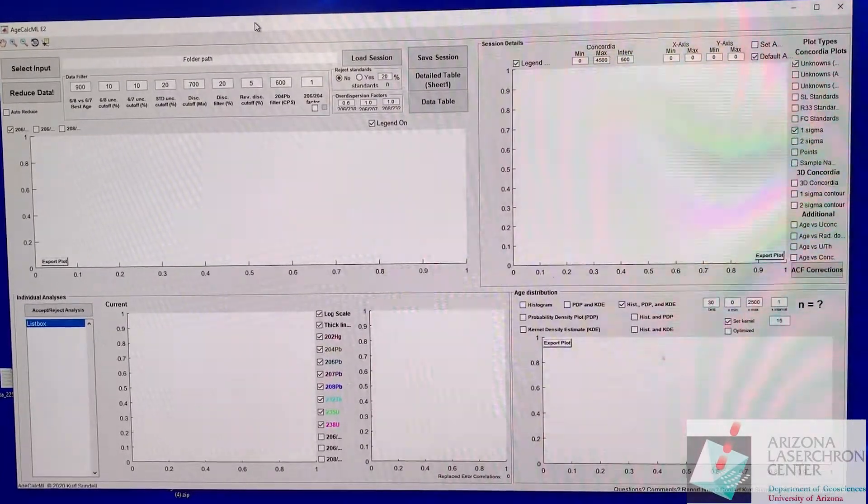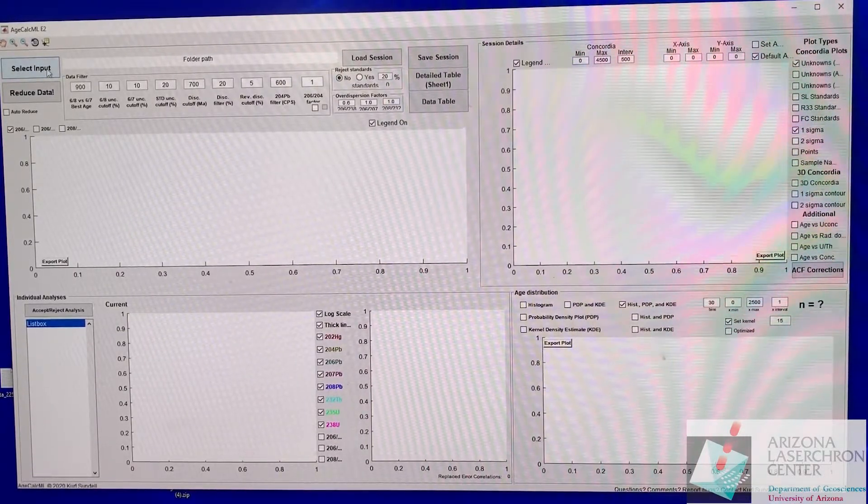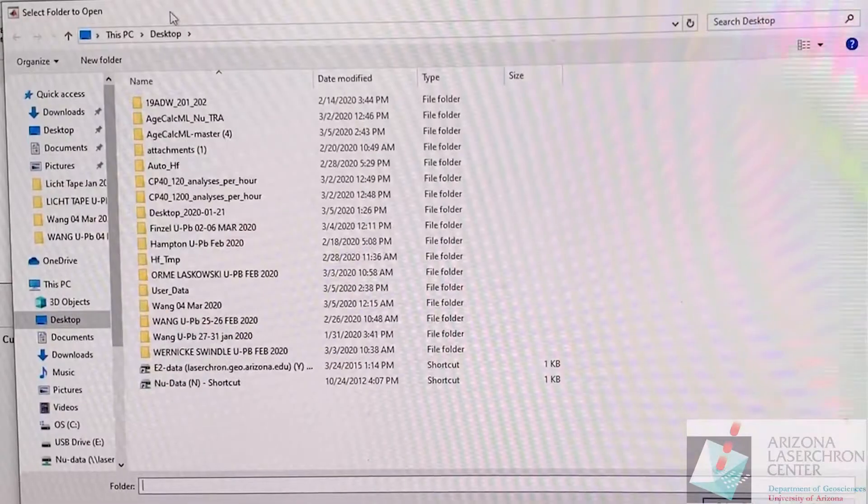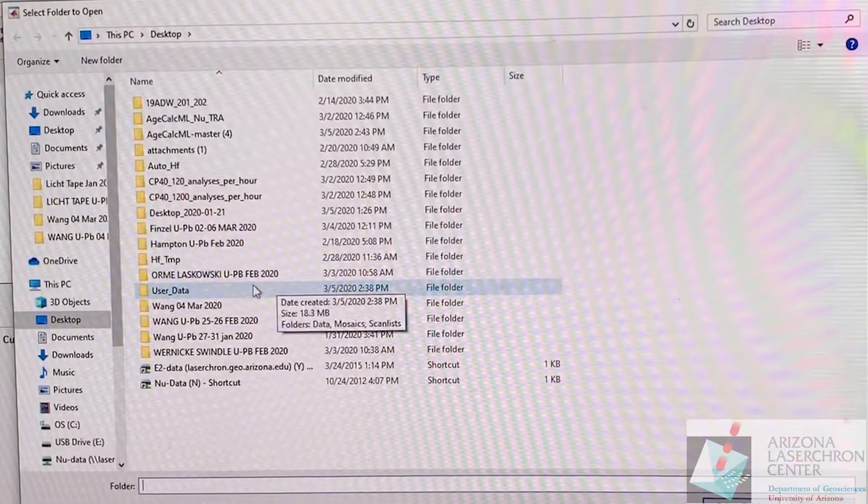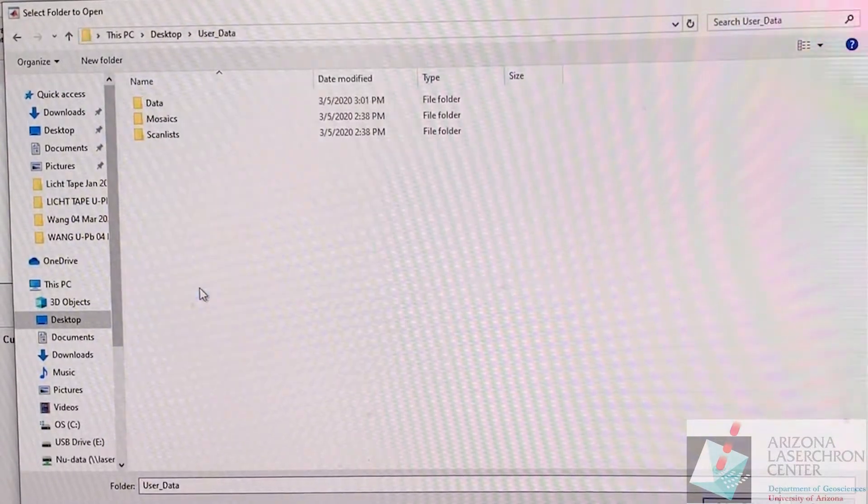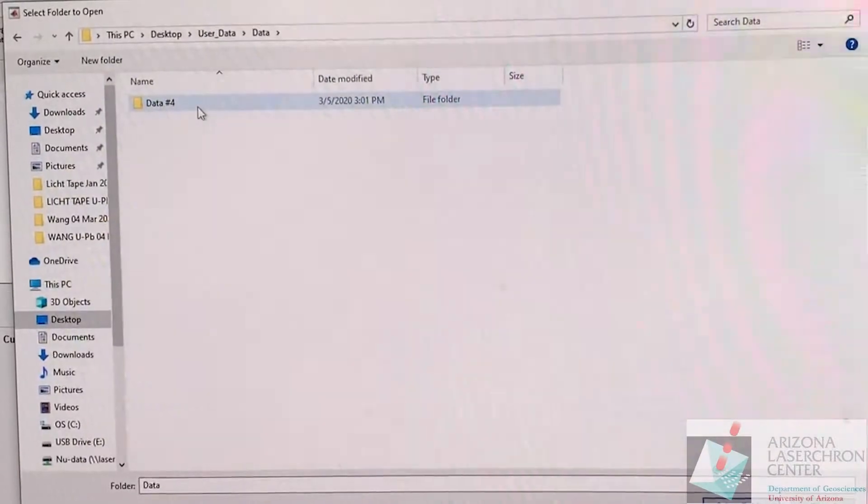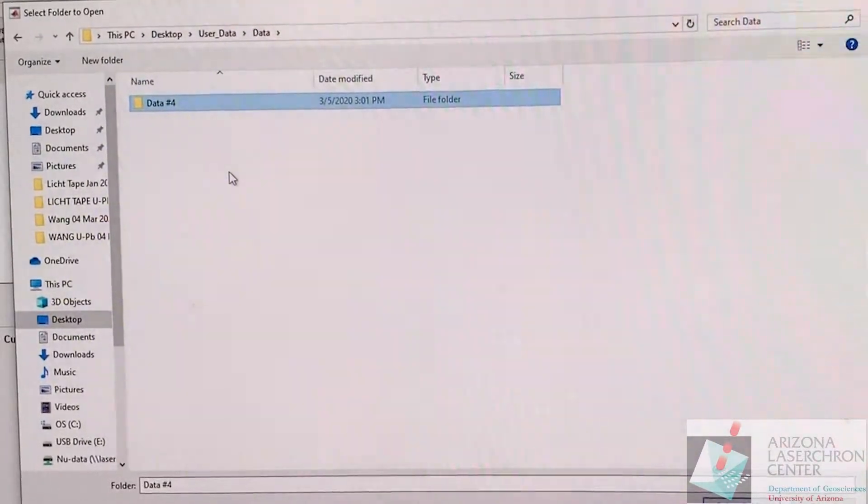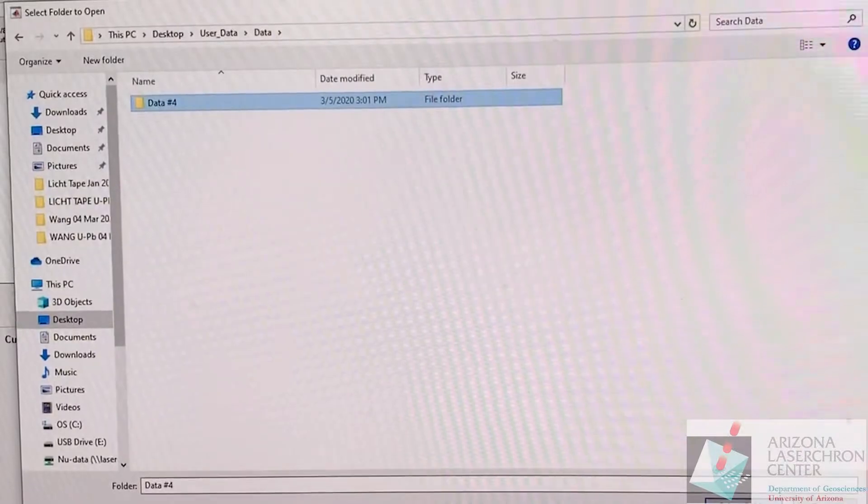You click on that and this will open up the data reduction interface. To import the data, go to select input and we're going to navigate to that data folder that I showed just a second ago. Go into data and select the entire folder.